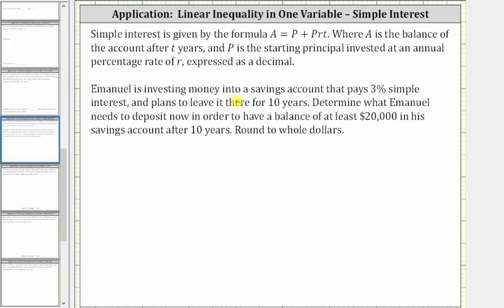Emanuel is investing money into a savings account that pays 3% simple interest, and plans to leave it there for 10 years. Determine what Emanuel needs to deposit now in order to have a balance of at least $20,000 in his savings account after 10 years, round to whole dollars.